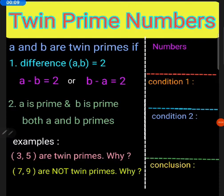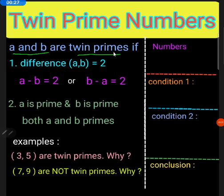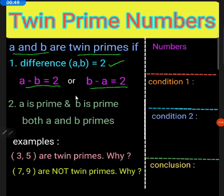Dear students, do you understand what is the definition of twin primes? Two numbers a and b are called twin primes if two conditions are satisfied. The first condition is the difference of the two numbers must be equal to two — that is, either a minus b equals two or b minus a equals two. The second condition is both a and b must be prime numbers.